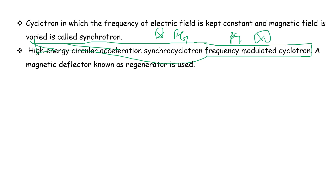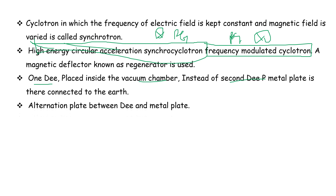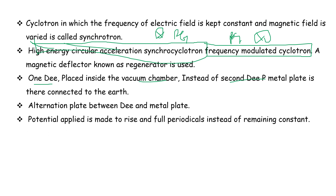In the synchrocyclotron, a magnetic deflector known as the regenerator is used. Only one D is placed inside the vacuum chamber instead of two Ds. A metal plate connected to earth replaces the second D. The alternating potential is applied between the D and the metal plate.